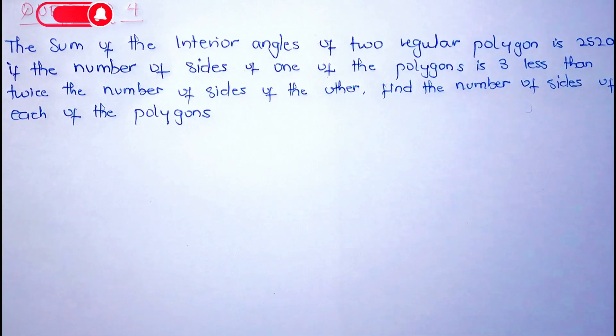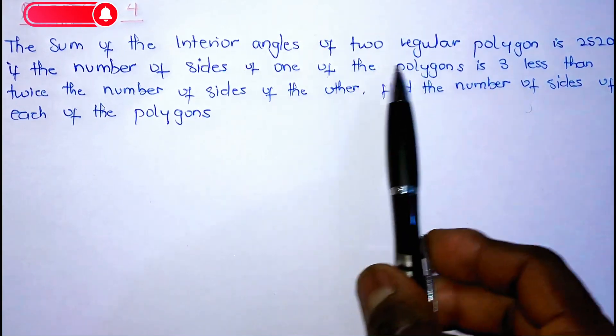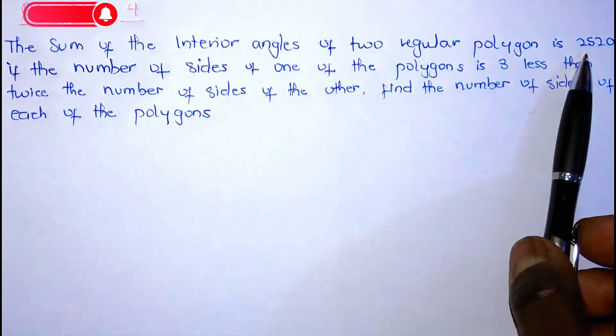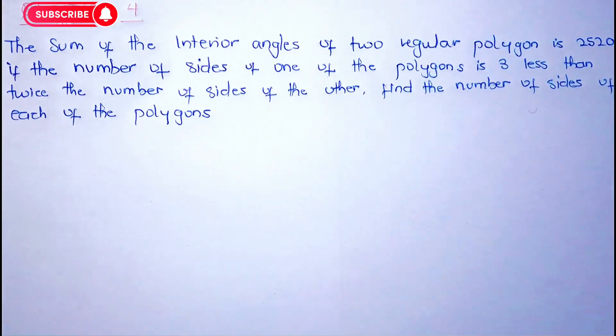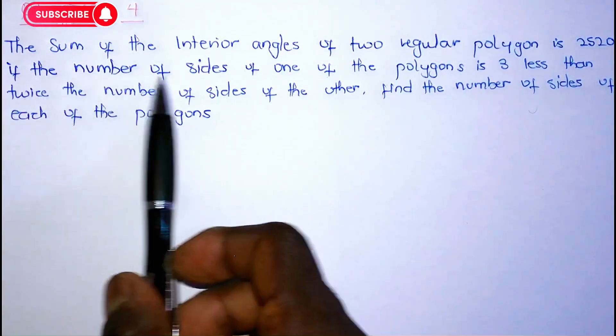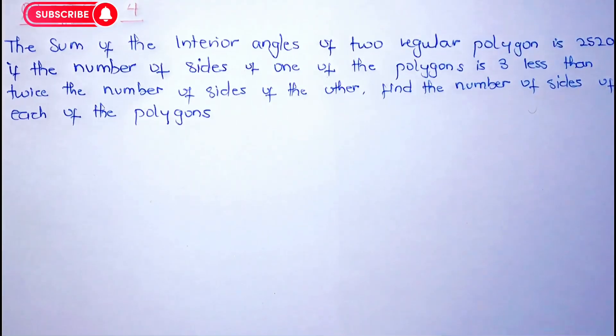Question 4. You have a word problem. The sum of the interior angles of two regular polygons is 2520 degrees. If the number of sides of one of the polygons is 3 less than twice the number of sides of the other, find the number of sides of each of the polygons.